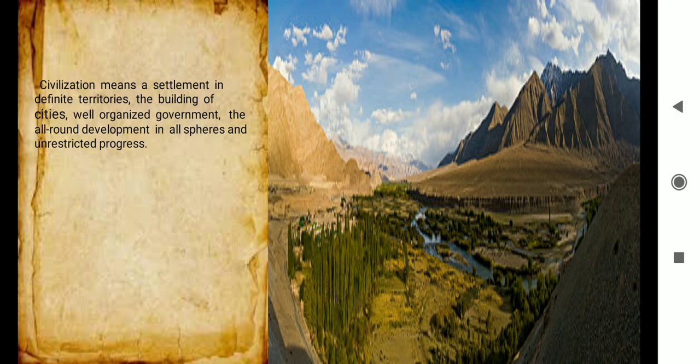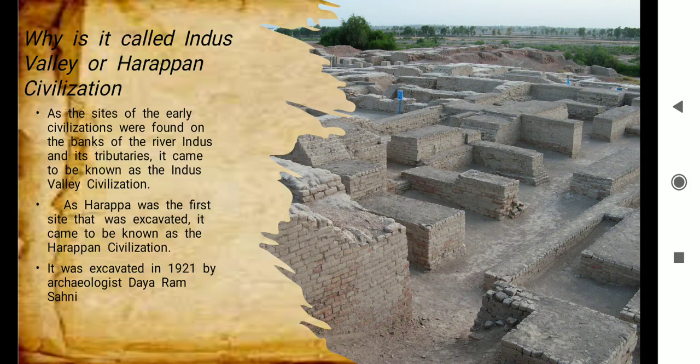A civilization refers to the settlement of people in a specific territory, well-planned cities, proper governing authority, and progress in all walks of life. This civilization is called the Indus Valley Civilization because it flourished in the Indus Valley. It is also called the Harappan Civilization because Harappa was the first city that was excavated.